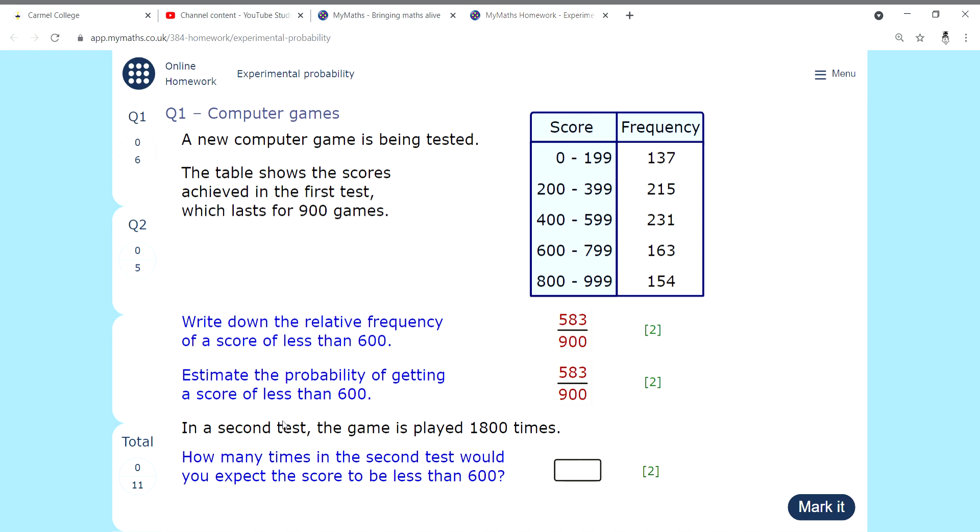The next question is: in the second test, the game is played 1,800 times. How many times in the second test would you expect to get the score less than 600? I'm going to take 583, divide it by 900, and multiply it by 1,800 times. This turns out to be 1,166. You can either type the fraction in and multiply it by 1,800, or the fraction just means the top divided by the bottom, and then you can multiply it by 1,800. Mark it, that's okay, next page.